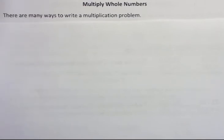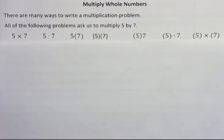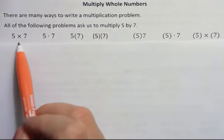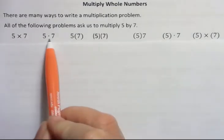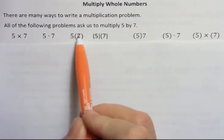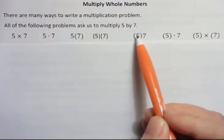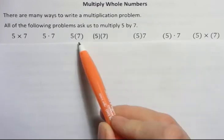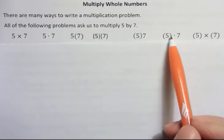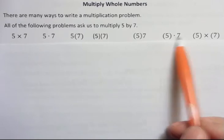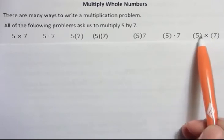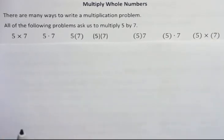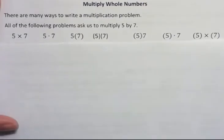There are many ways to write a multiplication problem. All of the following are asking us to multiply 5 by 7. You can see when we used to write it, we would always use the × here. We can also put a dot, or we can use parentheses, either around one number or both numbers. It could be around the first number or the second number. We could even put parentheses and a dot. That's a little redundant. Same thing with this. We can put parentheses around it with the multiplication sign in the middle. Those all say 5 times 7.